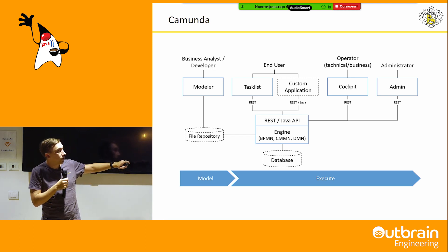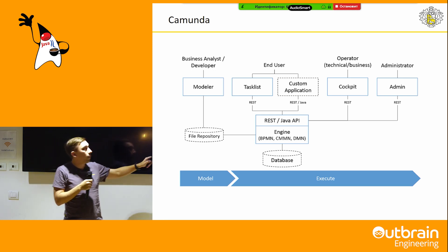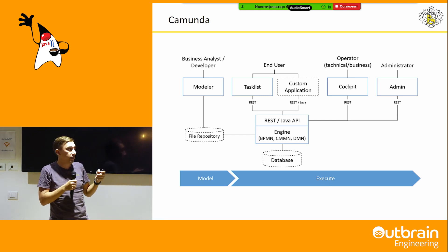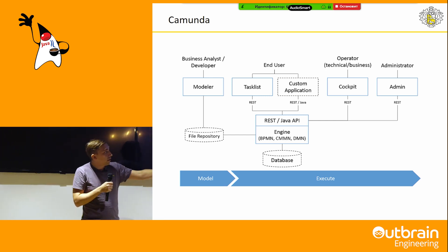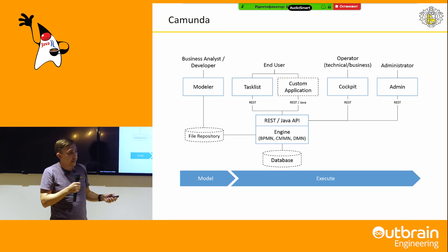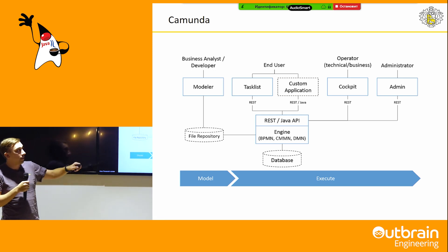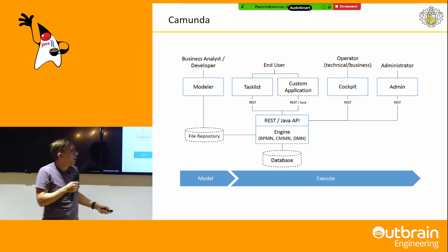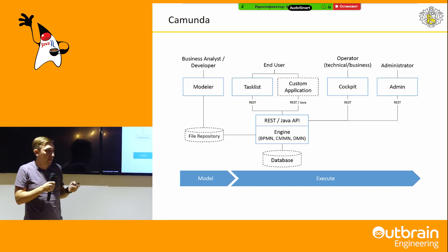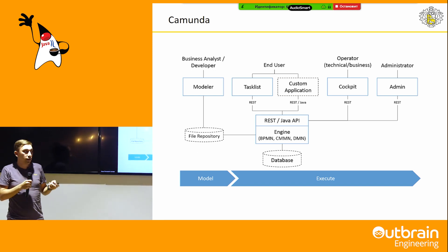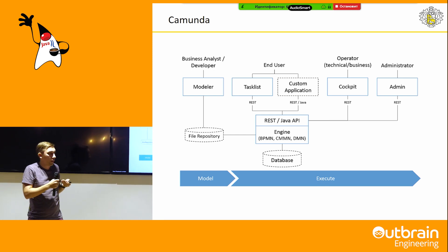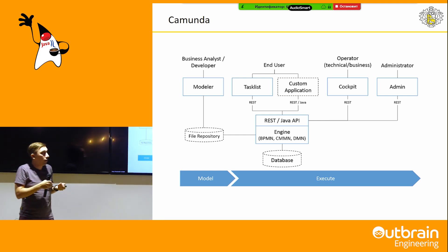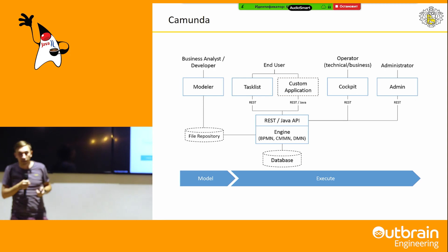Camunda also consists of a modeler where we can model our BPMN diagrams, a lot of REST APIs which can be used by admin tools — Cockpit and Admin — and for task handling. You can also build your own solution based on this REST API.